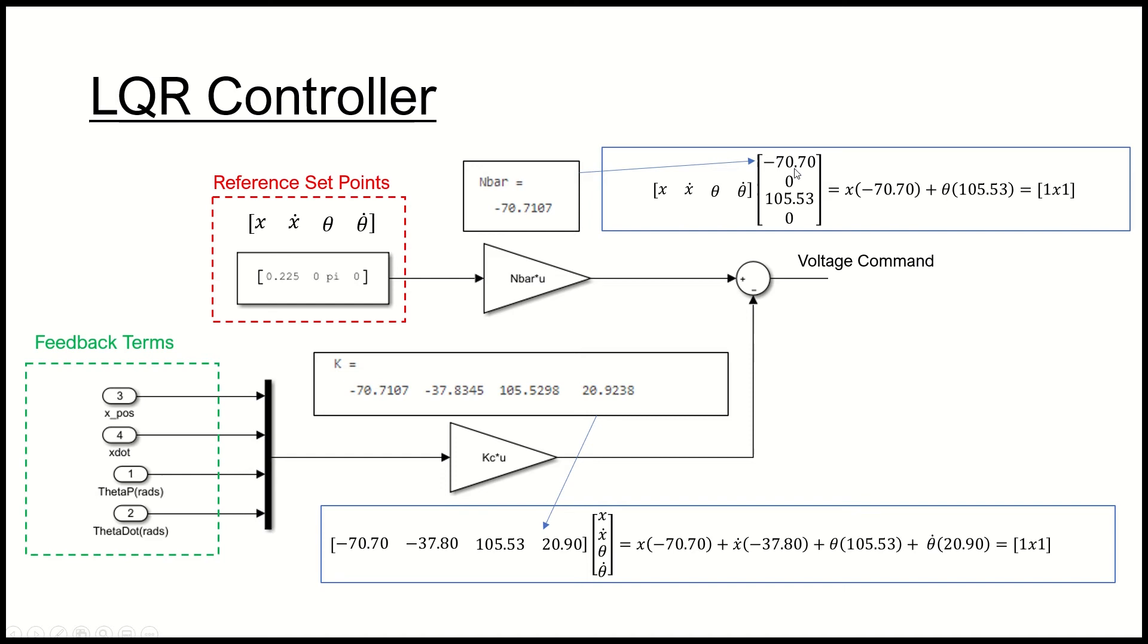This means that in my n bar, my n bar is not just a single value, it'll be a one by four matrix. I've just put this 105 here from the k gain matrix into the n bar matrix here, so that will compensate for that gain in the k matrix.